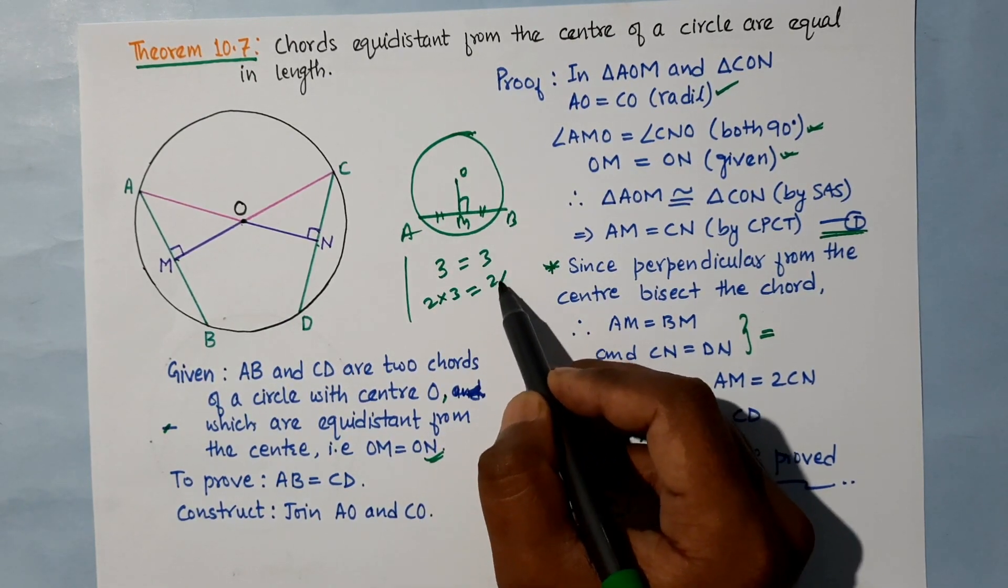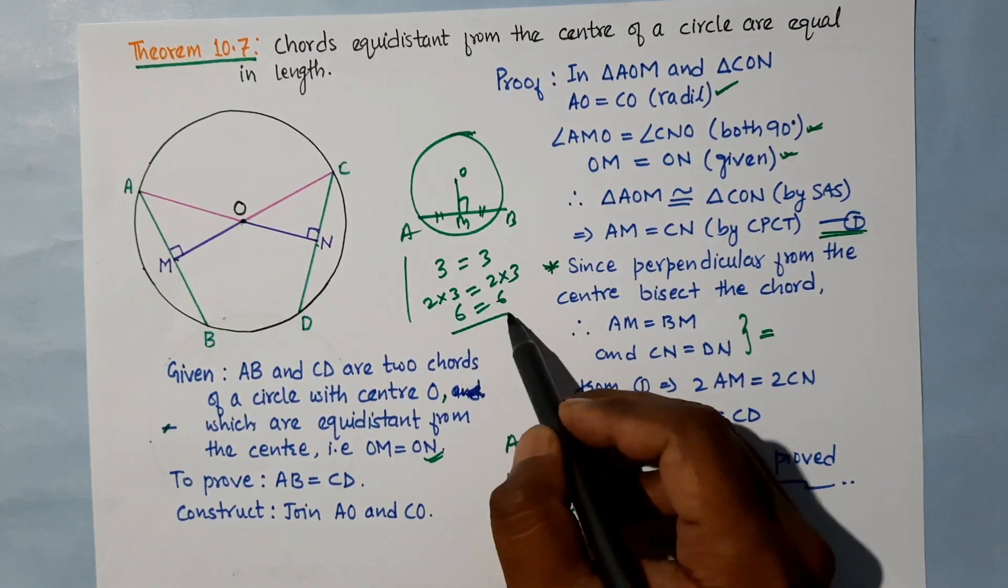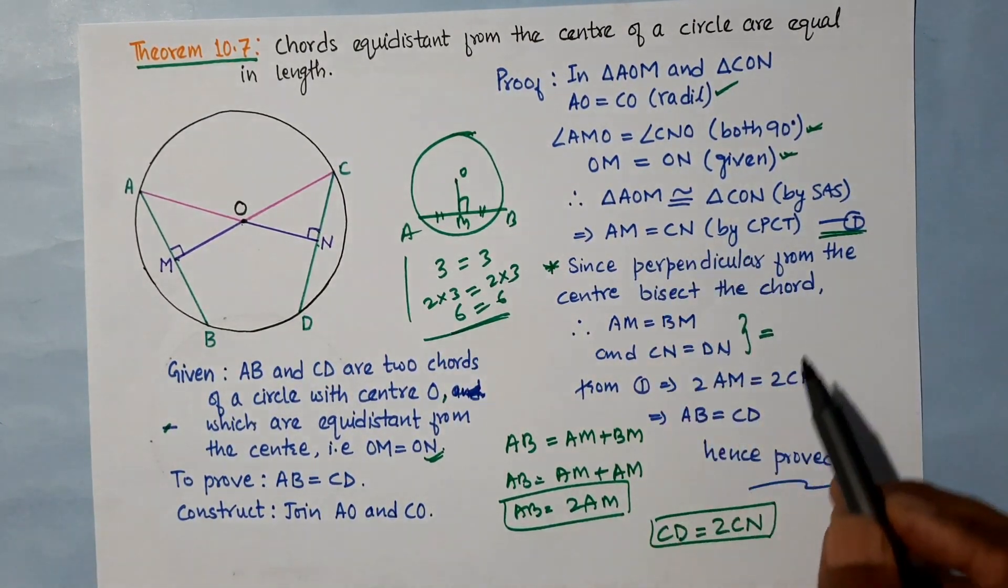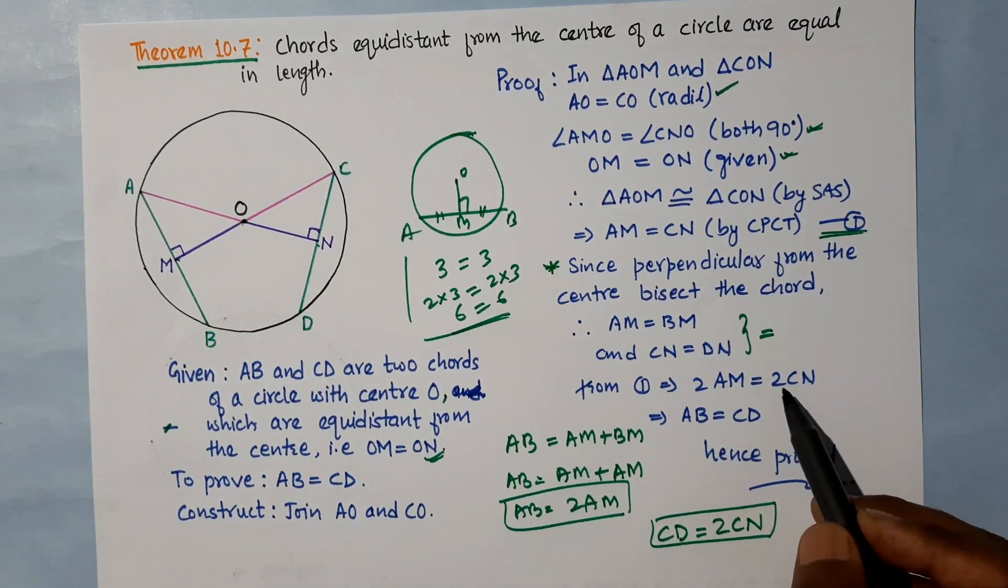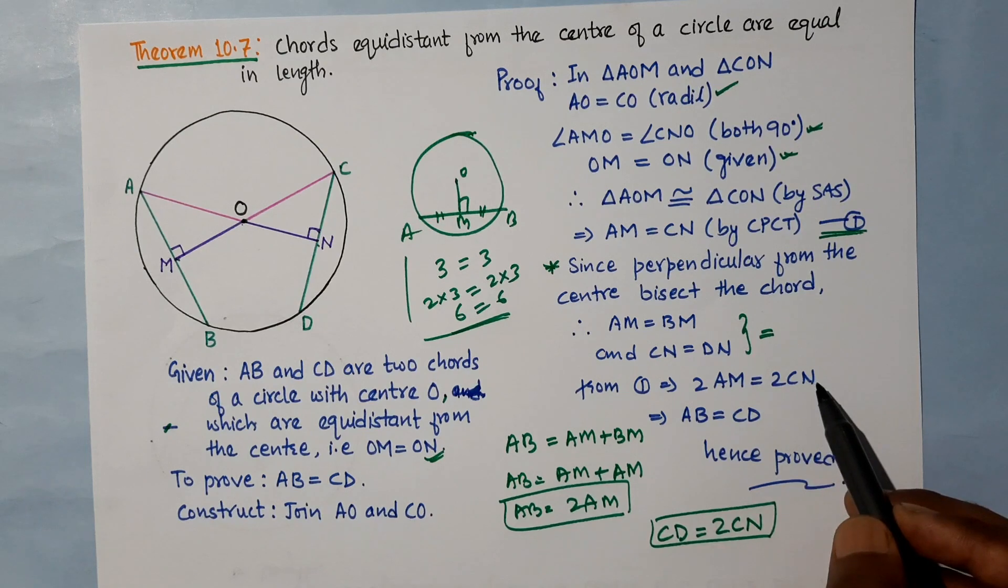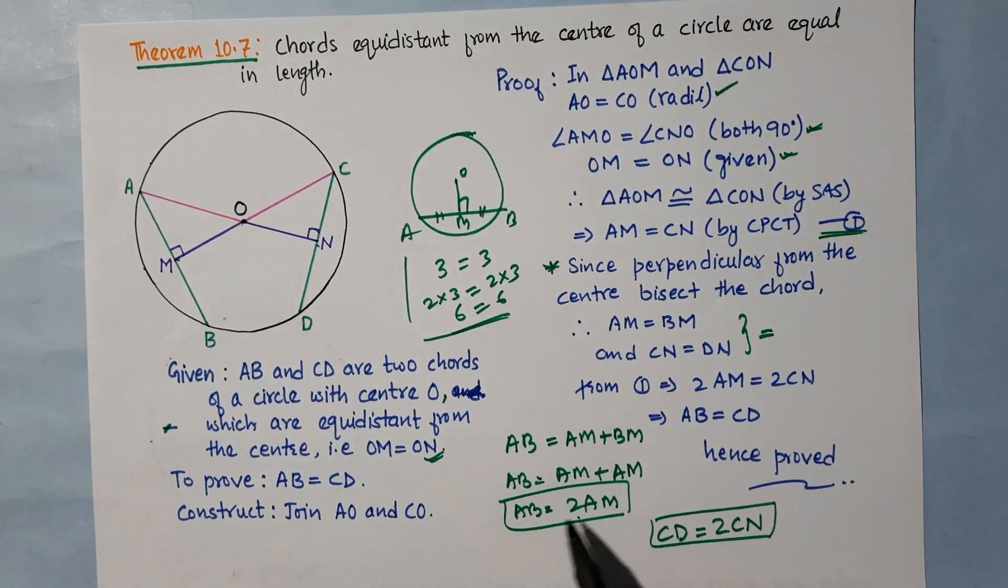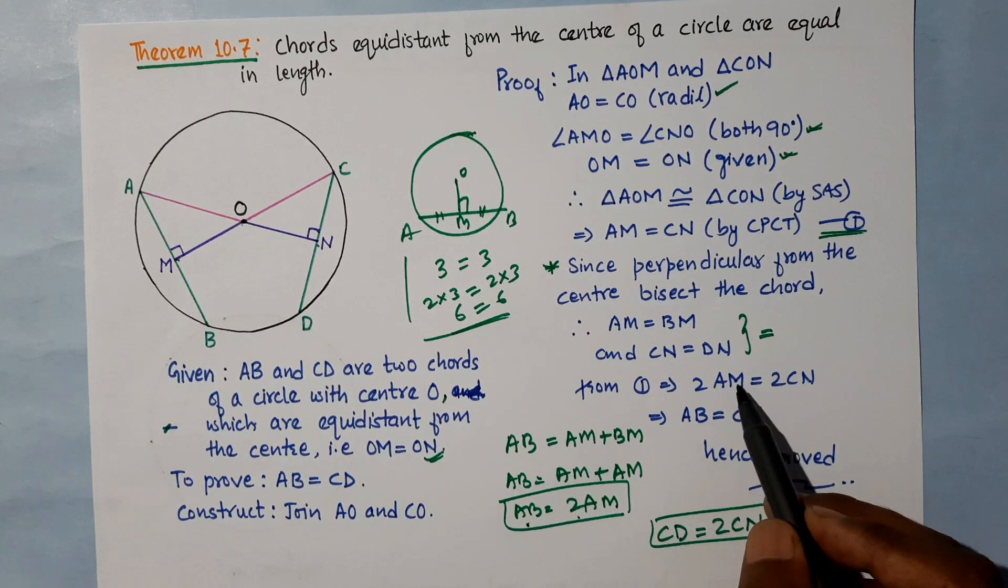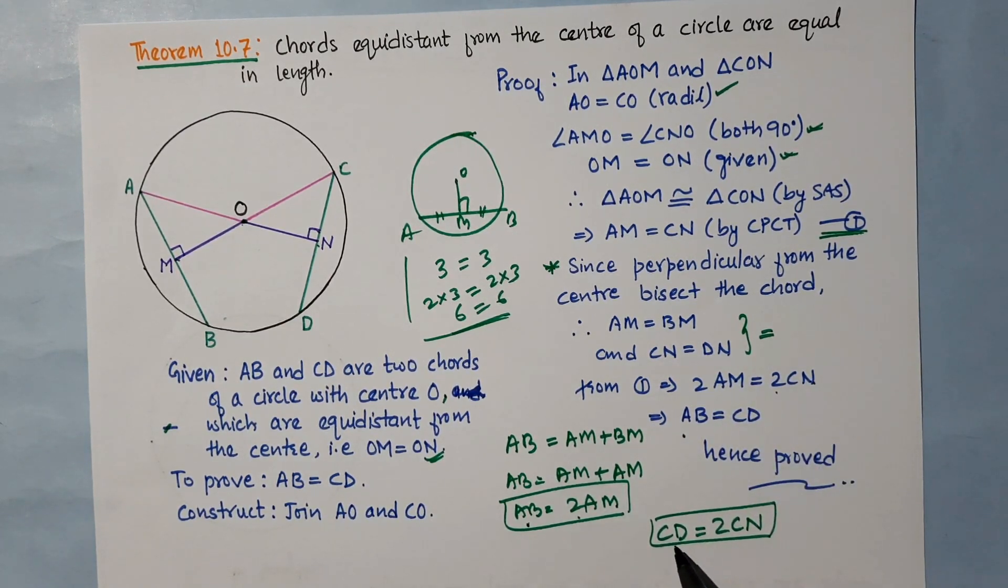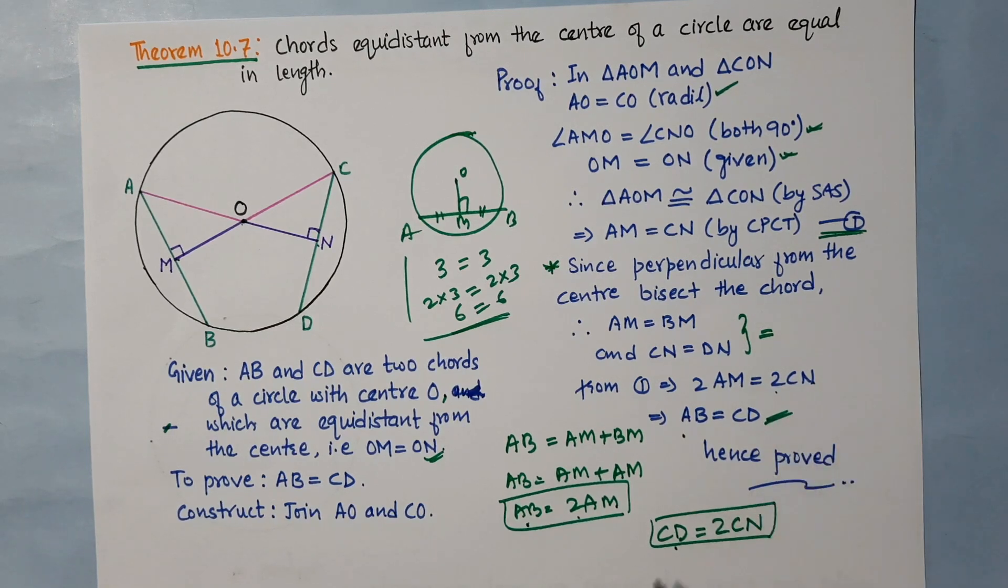We multiply both sides by 2: 2AM equals 2CN. We know 2AM equals AB and 2CN equals CD. Therefore AB is equal to CD, hence proved.